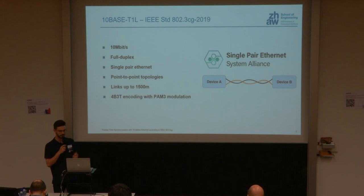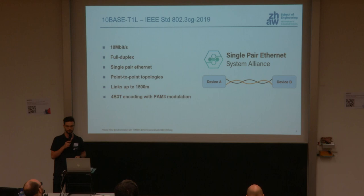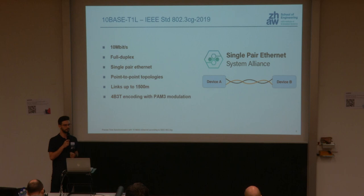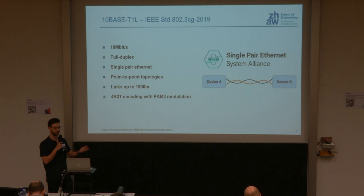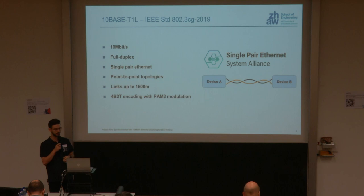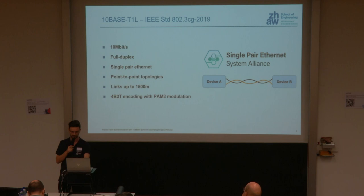There are two new Ethernet variants with 10 megabit per second speeds. One is 10BASE-T1S, oriented more toward the automotive industry using a multi-drop topology. The second is 10BASE-T1L, which I'm talking about today — mainly used in industrial settings for longer links. It uses full duplex communication over a single pair, point-to-point topologies with master and slave roles, links of up to 1.5 kilometers, and 4B3T encoding with PAM3 modulation — which will be relevant later.